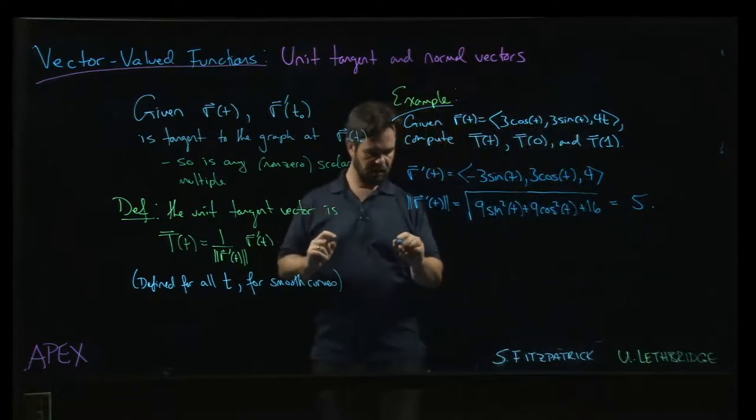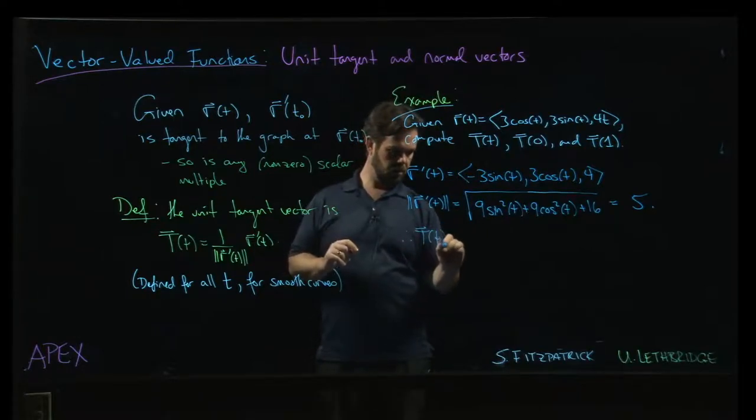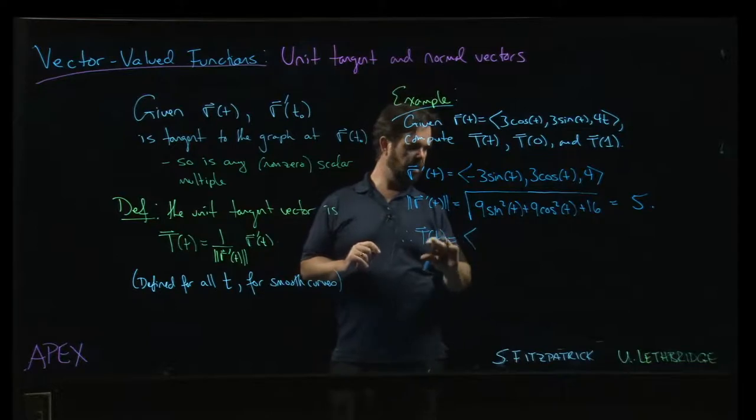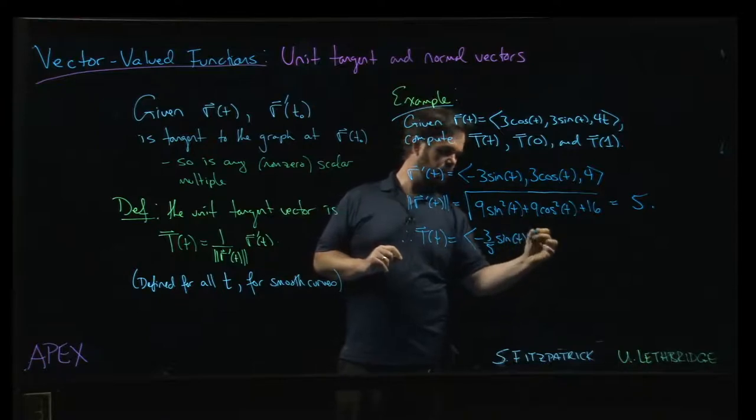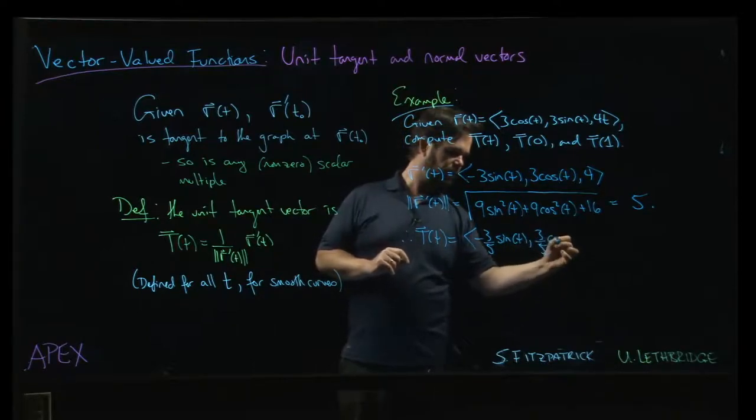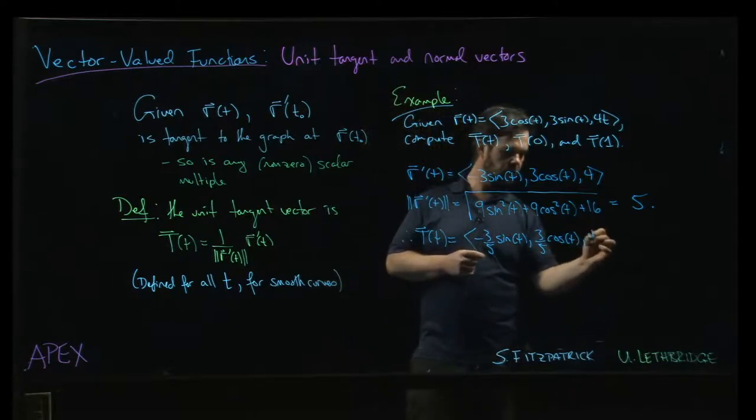And that means that the unit tangent vector is going to be, we just multiply by 1 over 5. So it's going to be minus 3 over 5 sin t, 3 over 5 cos t and then 4 over 5.